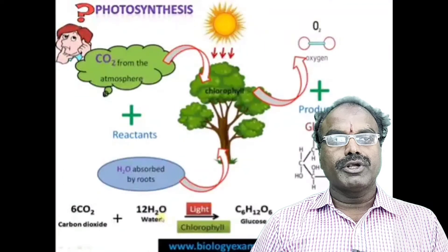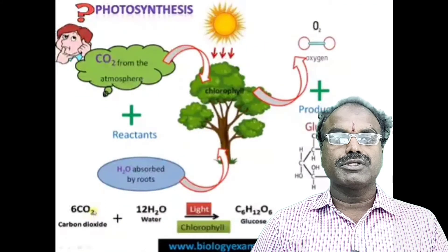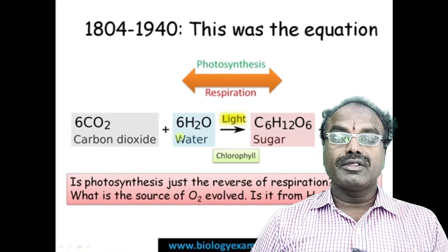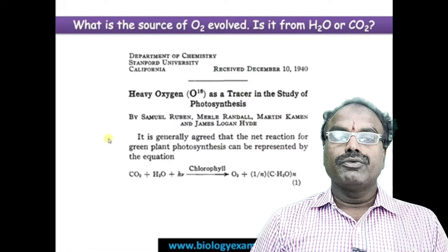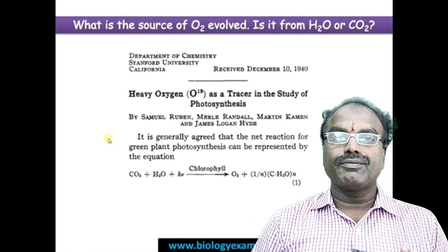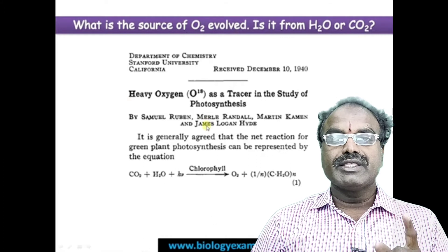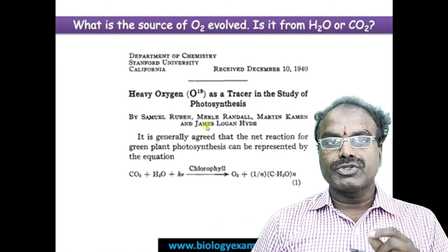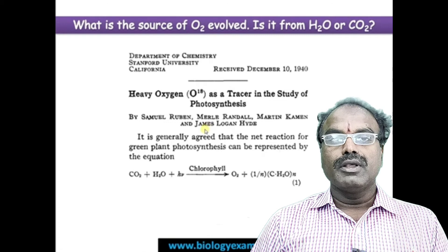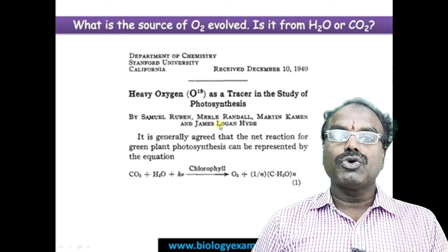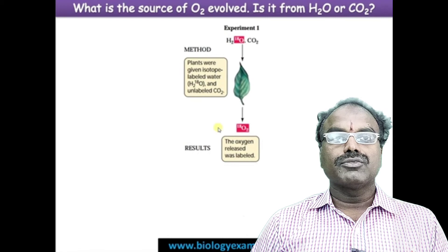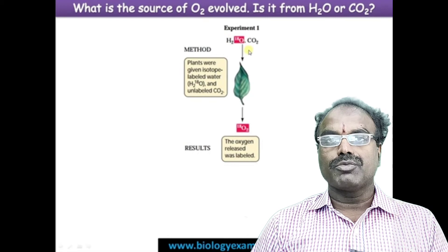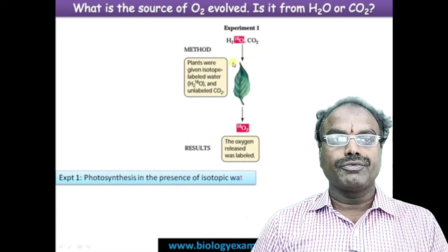A very important equation in photosynthesis: 6CO2 plus 12H2O, in the presence of light energy and chlorophyll, gives rise to C6H12O6 — this is the carbohydrate formula — plus 6H2O and 6O2. This is the photosynthesis formula, very well known to all of you.